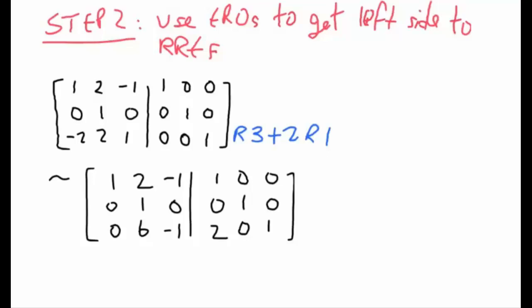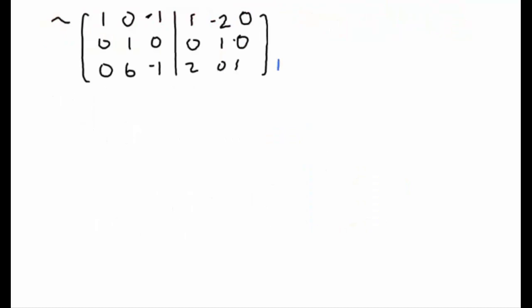Notice that we do have a leading one in the correct spot in column number 2 so we're going to use that leading one to make zeros above and below. And I will start by doing row 1 minus 2 row 2s. Next we'll take row 3 minus 6 times row 2.